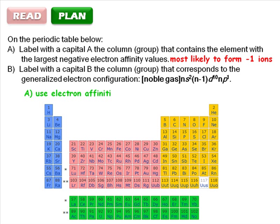And for Part B, we'll need to use the generalized configuration given in the question to place electrons in the S block, the D block, and the P block until we arrive at the correct column. Okay, we have a plan for both parts of the problem, so we're ready to solve.